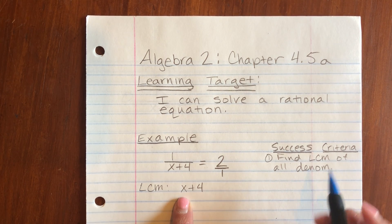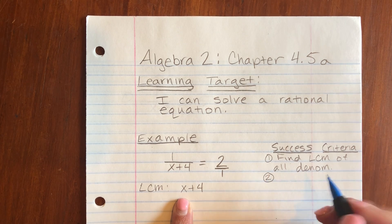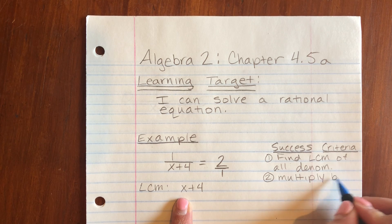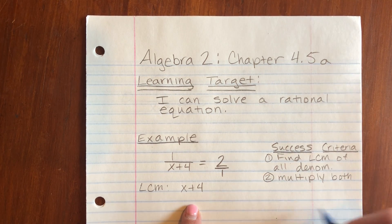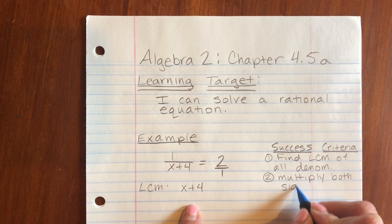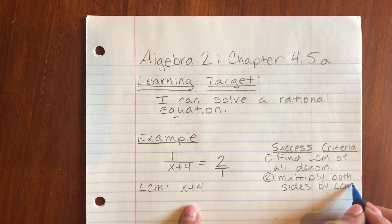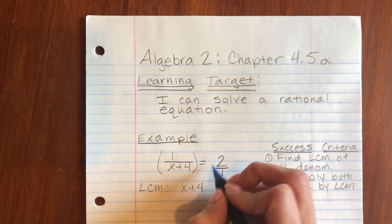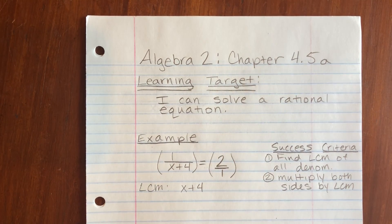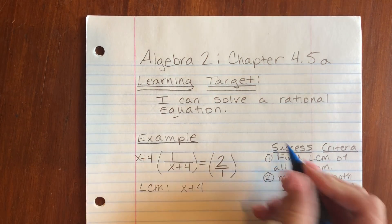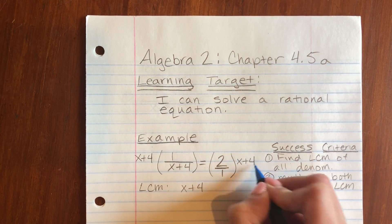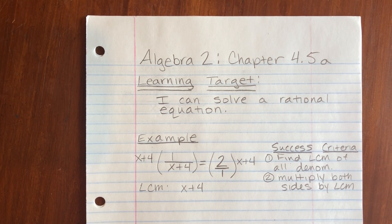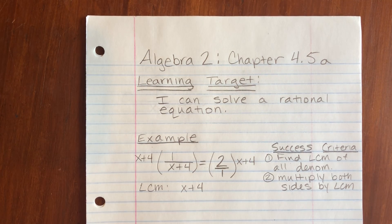Now you want to multiply both sides of the equation by that LCM. So I'm going to take that x plus 4 and multiply it to both sides of the equation. And what this is going to accomplish is it's going to eliminate all the fractions.